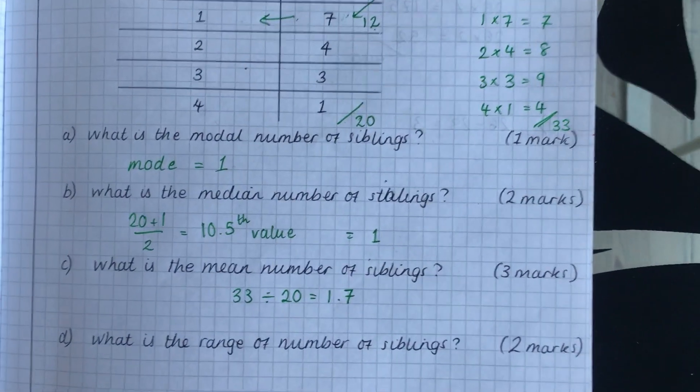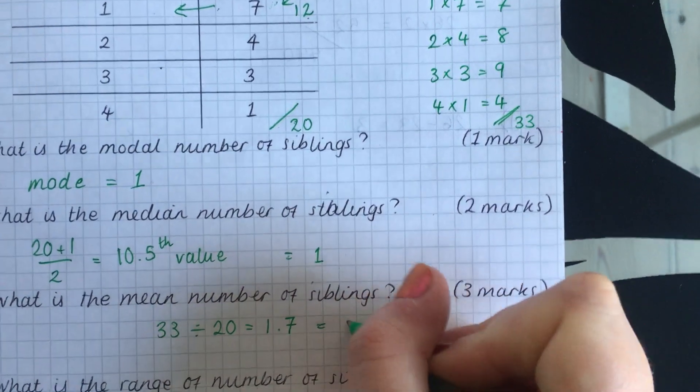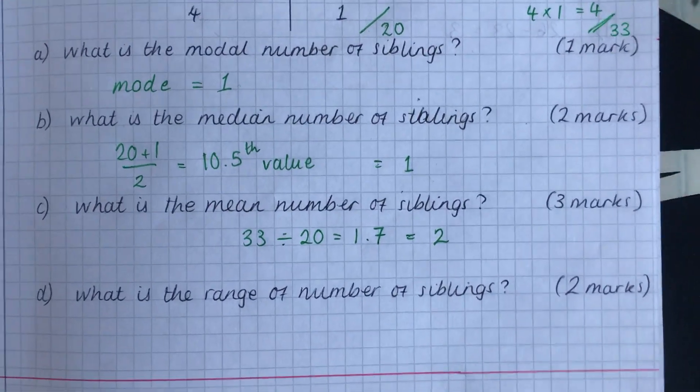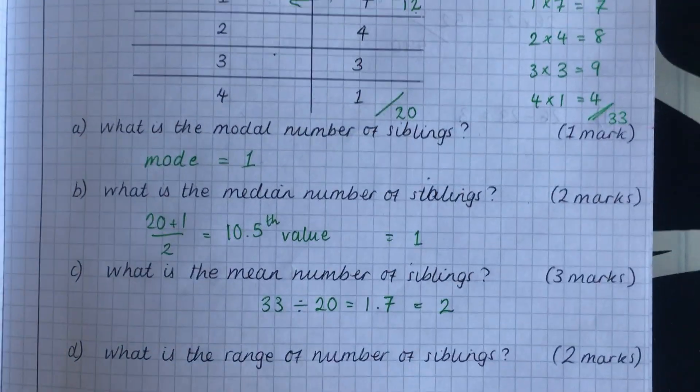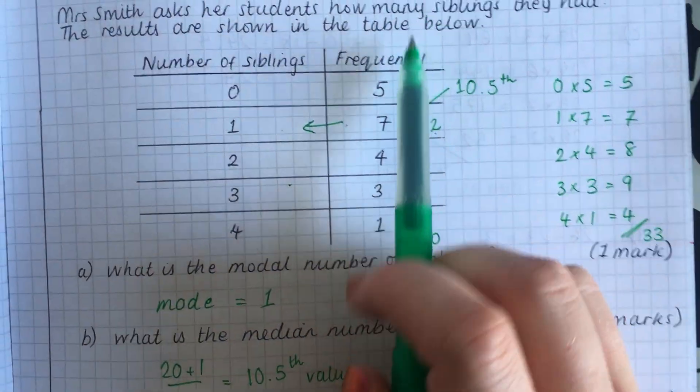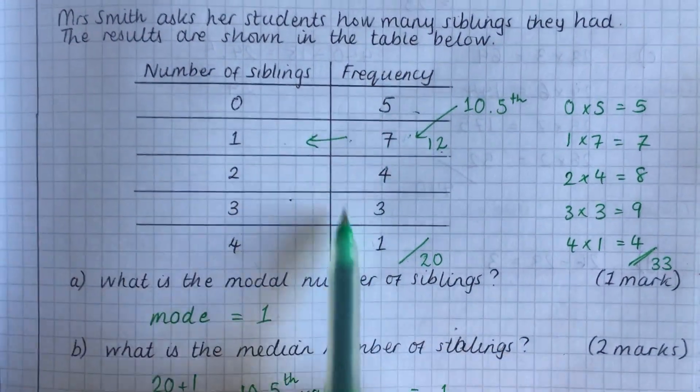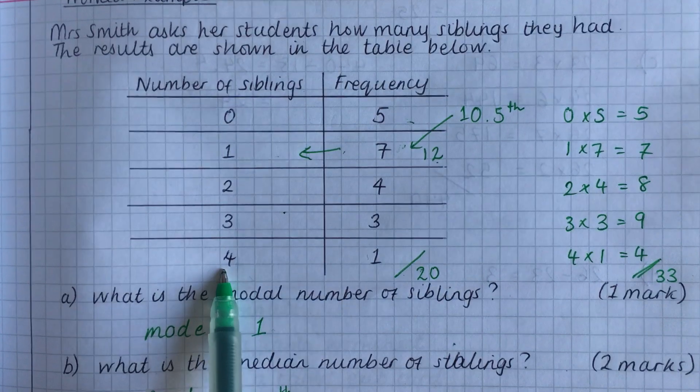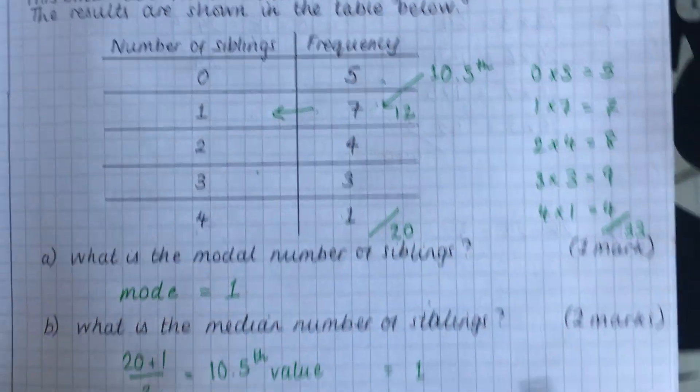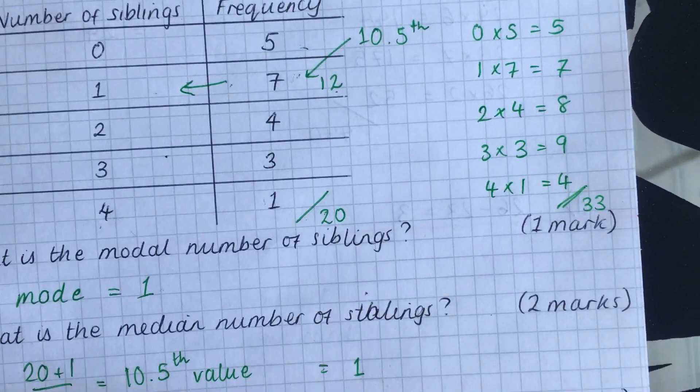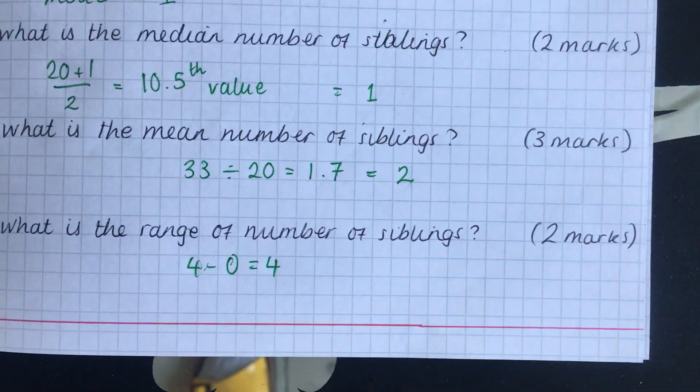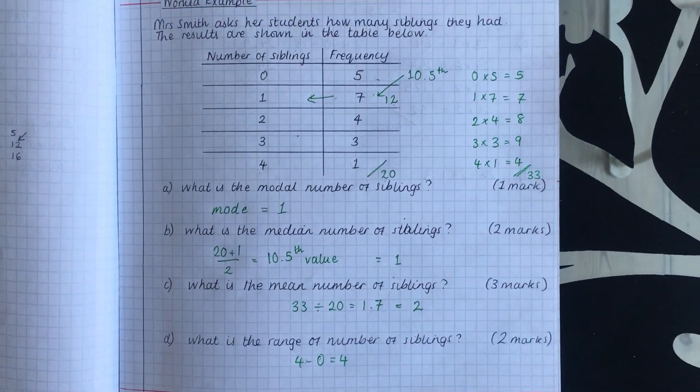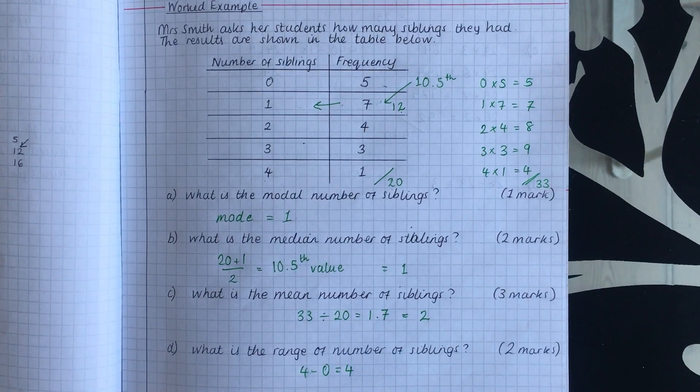Obviously, you can't get 1.7 siblings. So we're going to round that up to two. So our mean is two. And the range nice and easy is just the biggest number of siblings minus the smallest number of siblings. Now, if we look here, a common mistake is that people do 7 minus 1. But this isn't the number of siblings. This is just the frequency. And we're looking for the range in the number of siblings. So we're actually looking at this column here. So we're doing 4 minus 0 instead, which is obviously 4. So our answer for the range is 4. Make sure that you get this example written down. Make sure that you understand each method before you move on to the worked example.